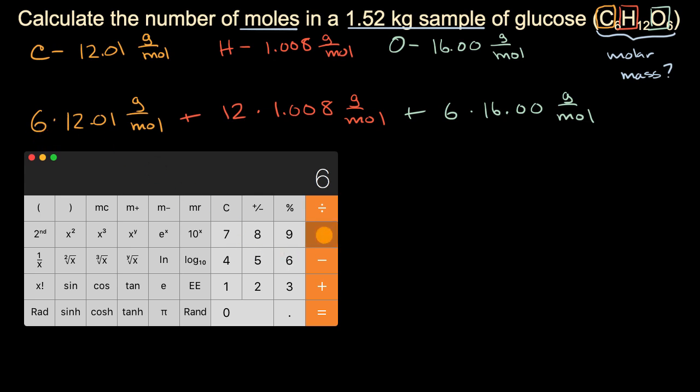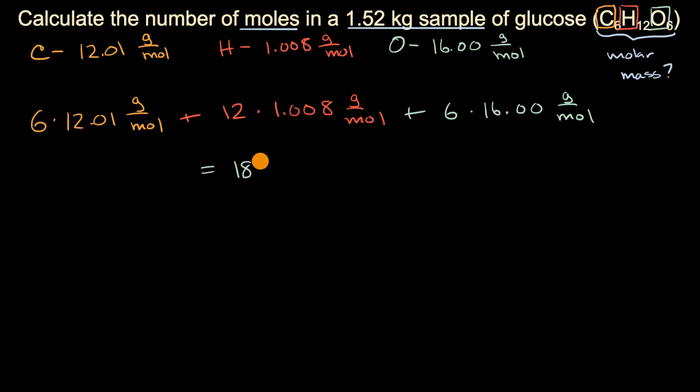Six times 12.01, plus 12 times 1.008, plus six times 16.00 is equal to... Now, if we're thinking about significant figures here, the molar mass of hydrogen goes to the thousandths place, but we only go to the hundredths for carbon and oxygen. We're adding all these up together, so I can only go to the hundredths place for significant figures. So 180.16, that's equal to 180.16 grams per mole.